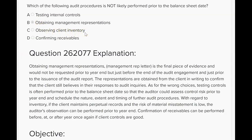If the client maintains perpetual inventory records and the risk of misstatement is low, the auditor can observe inventory prior to the balance sheet date. Confirming receivables can be performed before, at, or after year end. Once again, if client controls are good, we can confirm receivables early. If client controls aren't good, then we'll confirm receivables close to the balance sheet date.